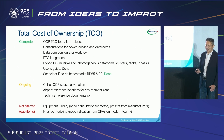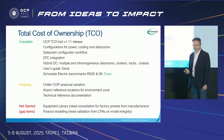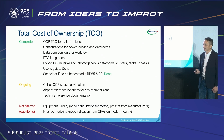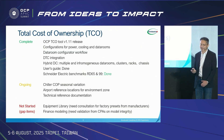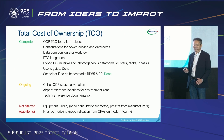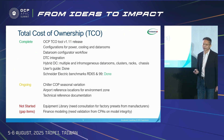The ongoing items include chiller COP seasonal variation, airport reference locations for environment zones, and technical reference documentation. Those gap items need support from outside the workgroup — both other OCP groups and collaborators who can work within an open environment.